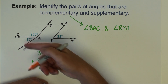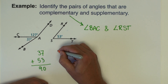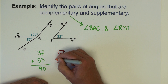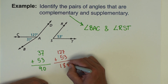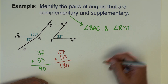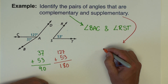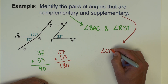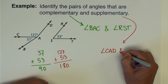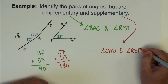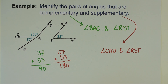Now looking at these three numbers, if I look at 127 and 53 and add those together we get 180. So our supplementary angles are angle CAD and angle RST. We're simply picking out the pairs that add to 90 and picking out the pair that adds to 180.